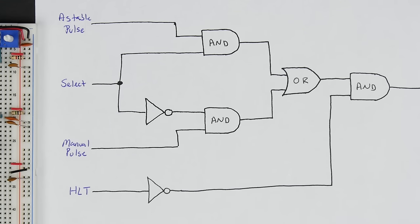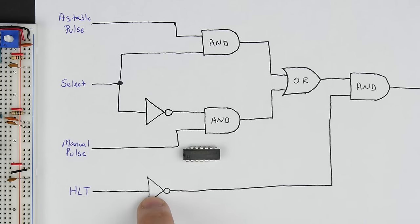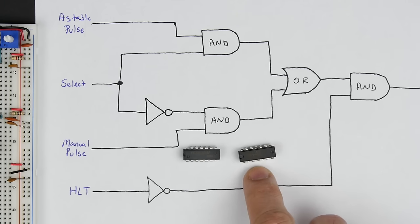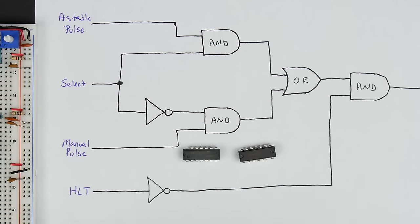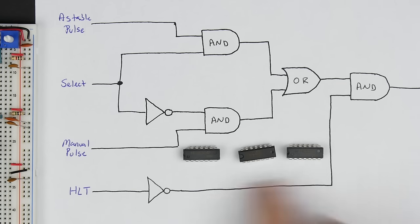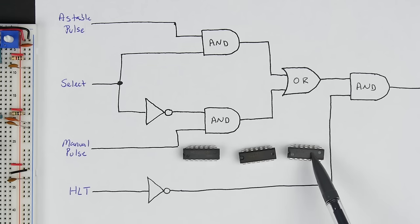To build this up, we've got a couple inverters, three AND gates, and an OR gate. We could use the 74LS04, which has six inverters — we're only going to use two of them. We've got the 74LS08, which has four AND gates — we're going to use three of those. And then the 74LS32, which has four OR gates — we're only going to use one. It's a little bit inefficient to use these three chips since we're not using all the gates on each one, but it should work.